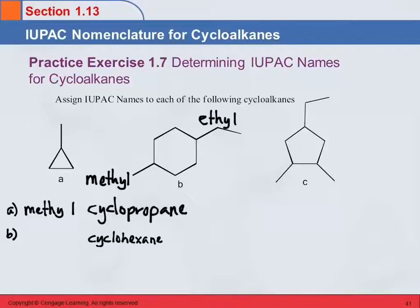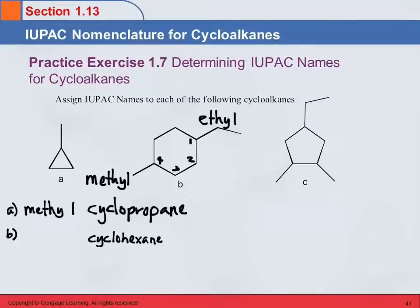We have to specify where the groups are. We're going to start by numbering with the carbon that one of them is attached to, and then go clockwise or counterclockwise to give the smallest numbers. Counting one direction gives us one and four; counting the other direction still gives us one and four. How do we decide which one gets to be one — ethyl or methyl? Alphabetical: we're going to give ethyl the one and methyl the four.